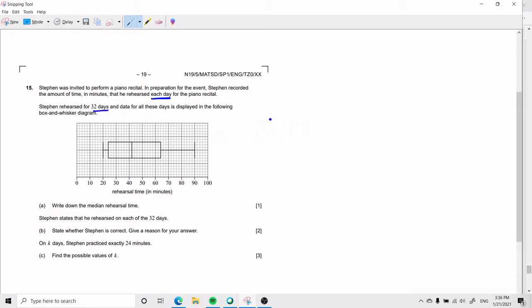And so, part A asks you to write down the median rehearsal time. Now, I will immediately say that Q2 equals the median, but if you have no idea what I'm saying, you will have the explanation now.